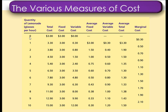So when we divide total cost by number of units produced it gives us average total cost. When we are producing one unit, our total cost is 3.30, so we divide 3.30 by 1, which gives us an average total cost of 3.30 dollars. When we are producing two units, our total cost is 3.80, so we divide total cost by the number of units.